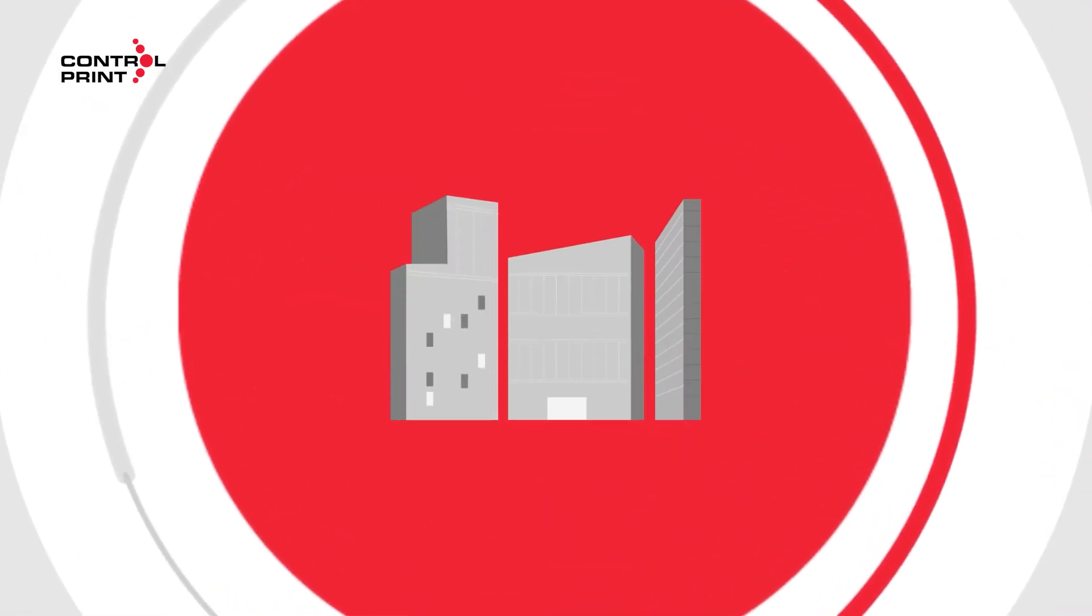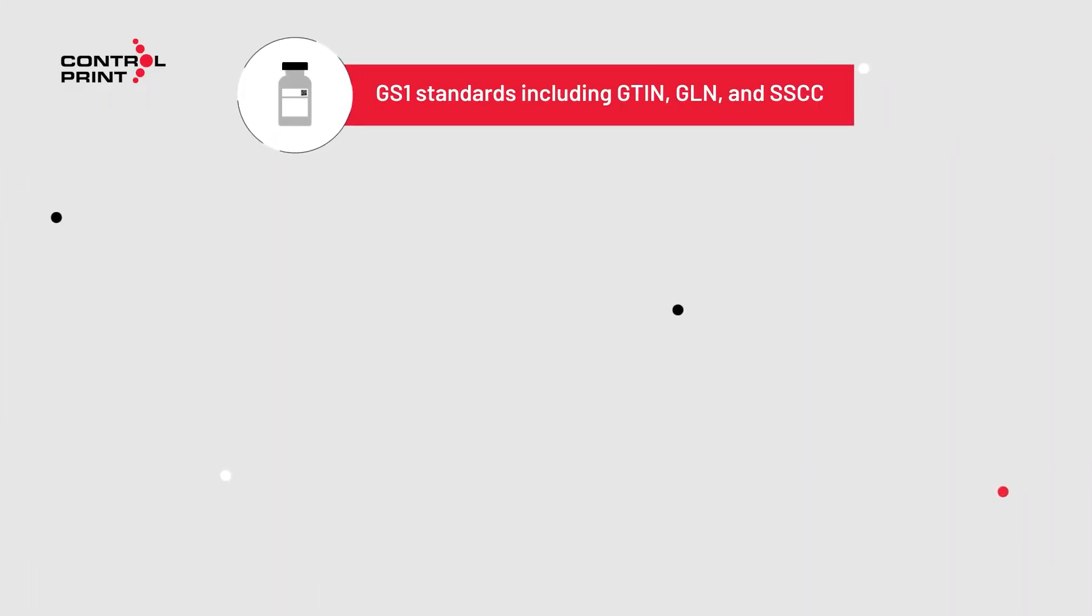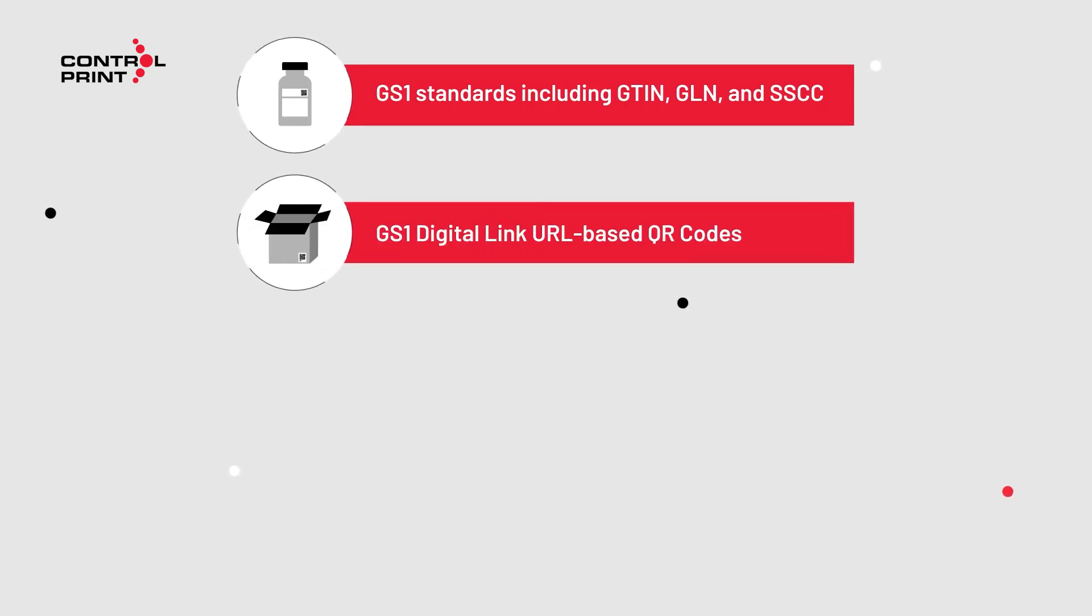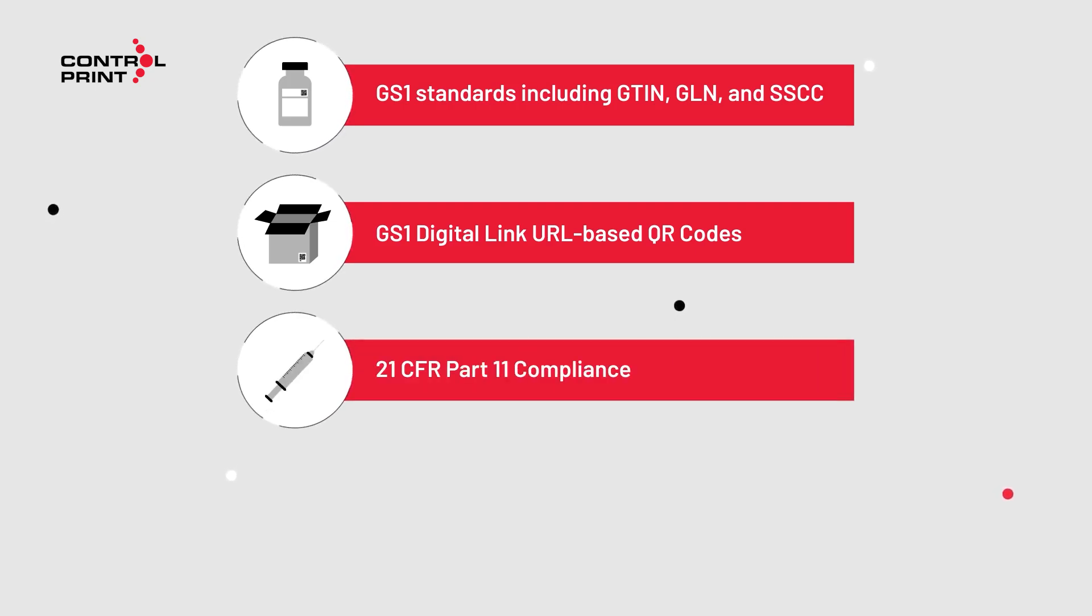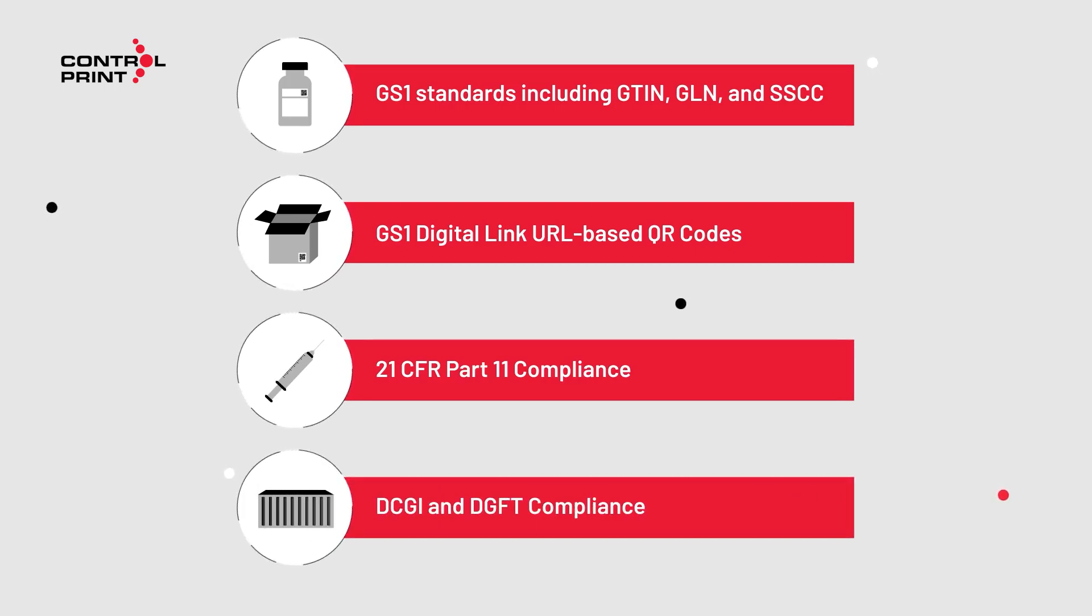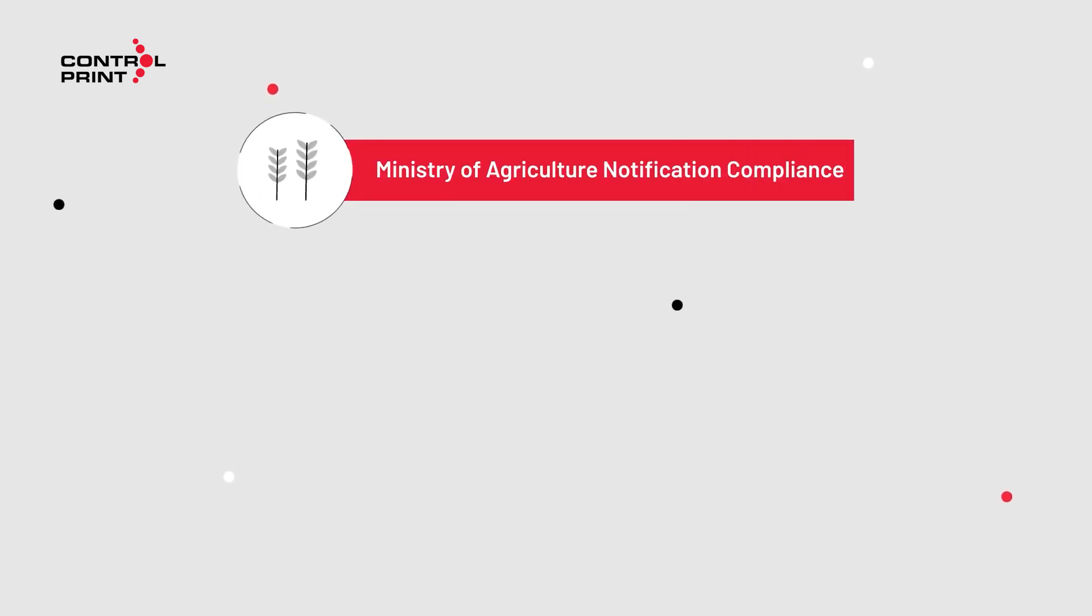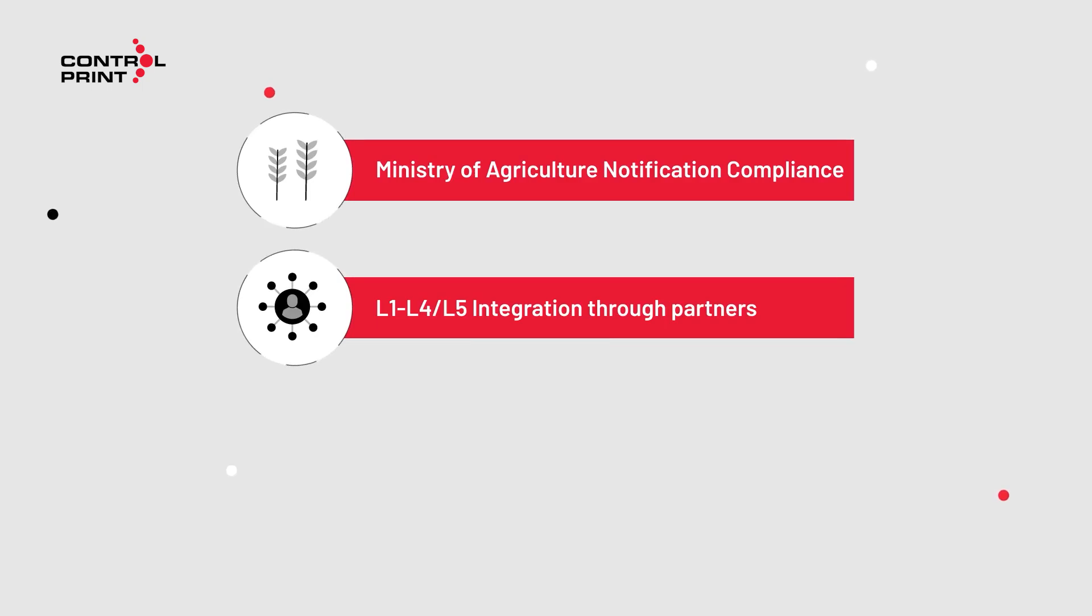Our comprehensive services provide compliance solutions across multiple industries, ensuring you meet all necessary regulations. We cover GS1 standards, including GTIN, GLN and SSCC, GS1 digital link URL-based QR codes, 21 CFR Part 11 Compliance, DCGI and DGFT Compliance, Ministry of Agriculture Notification Compliance, and L1-L4-L5 Integration Through Partners.